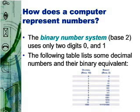The important point to understand is that the binary number system allows computers to represent virtually any number simply by using 0s and 1s, which conveniently translate into electrical on and off signals.